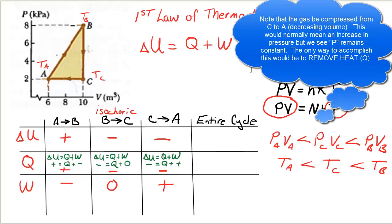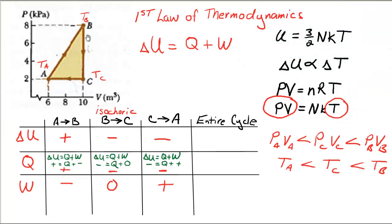Now what about for the entire cycle? Well, delta U is the easiest one to determine for the entire cycle. If I start at a temperature TA and I go around the entire cycle and I end up right back at temperature TA, then my overall change in temperature is zero. So delta U overall is zero. So delta U, very simple for the entire cycle. We're going to say it's zero, and that's because my overall change in temperature is zero.